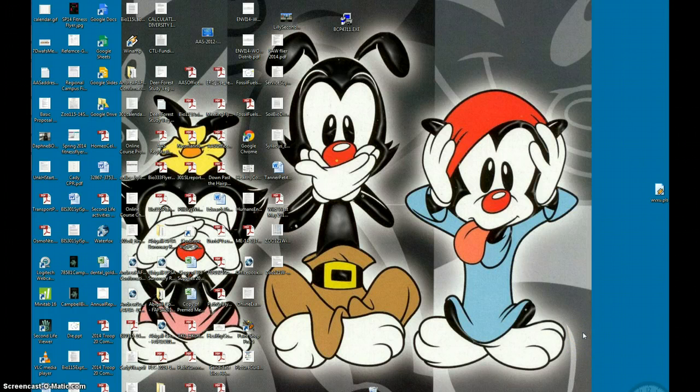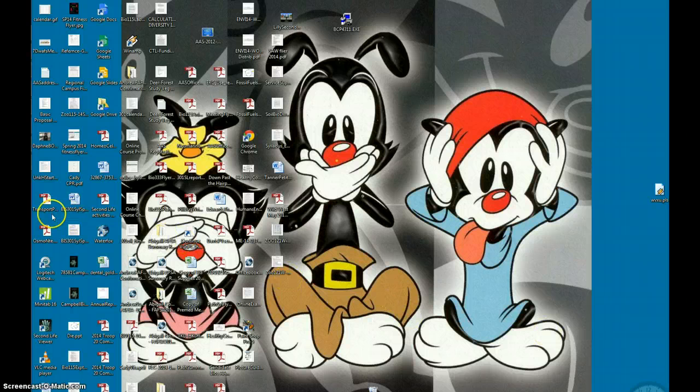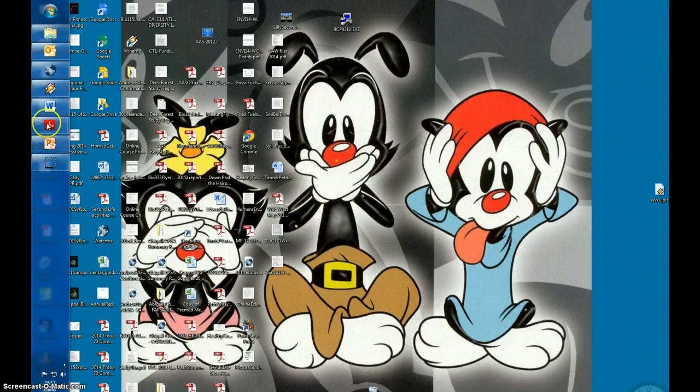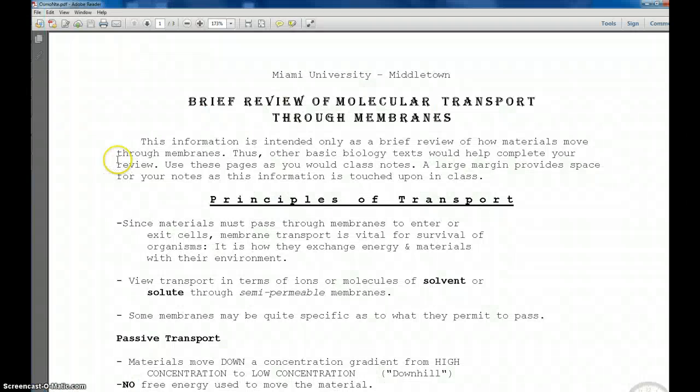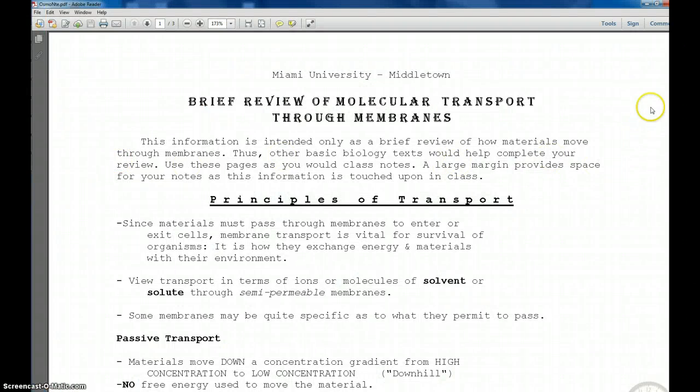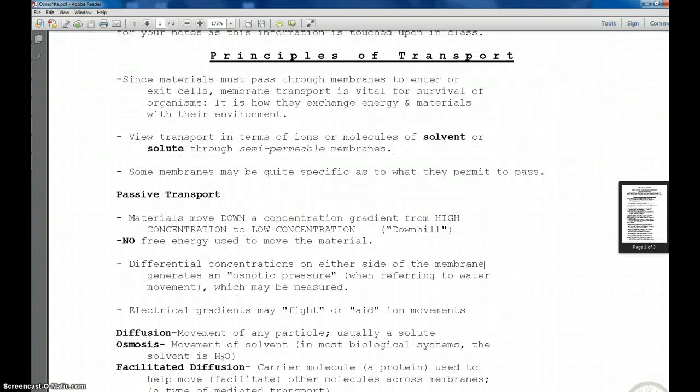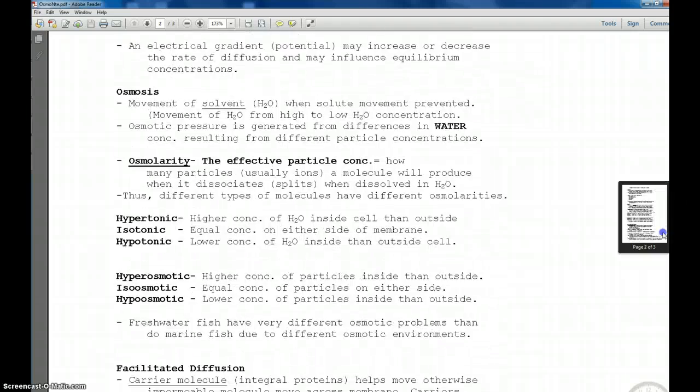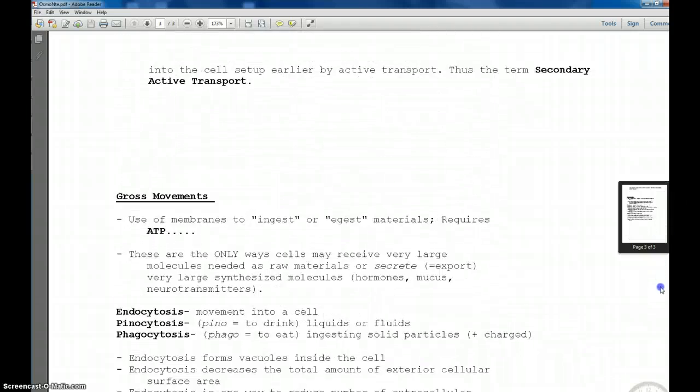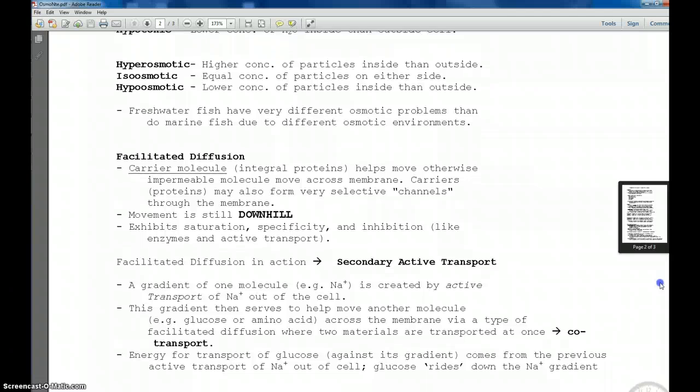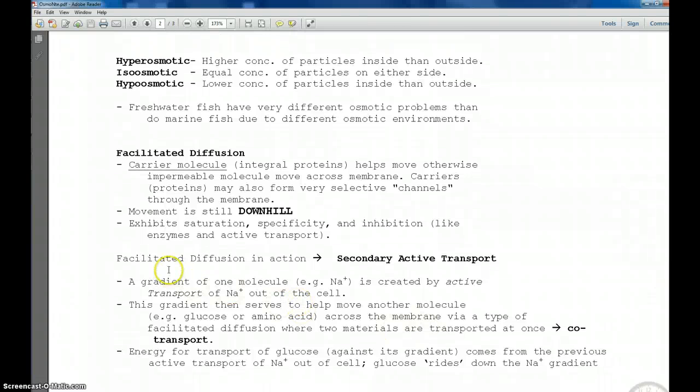As you look at the picture of my three kids, we'll move on and look at the handout that you got on transport through membranes. And in there, it says a little bit about the type of co-transport that we're talking about. That's what we taught right here. Facilitated diffusion in action. Secondary active transport.